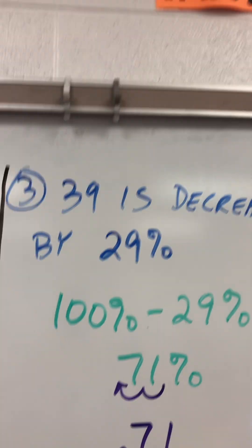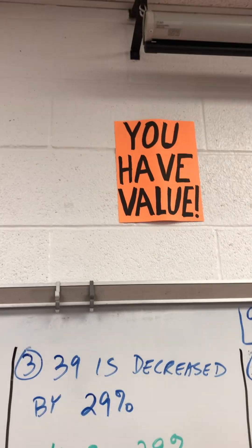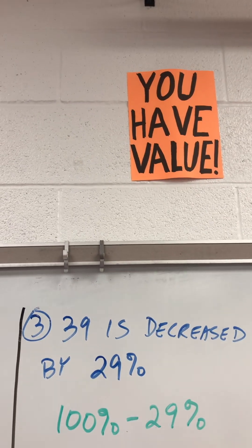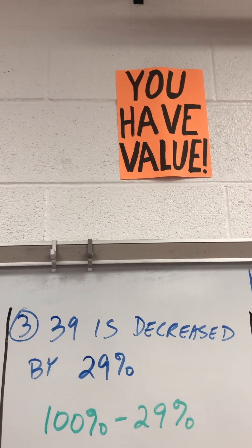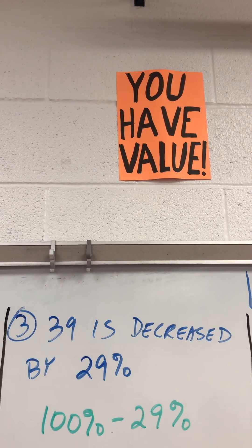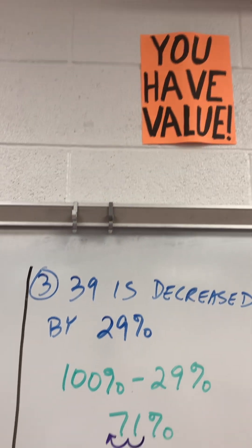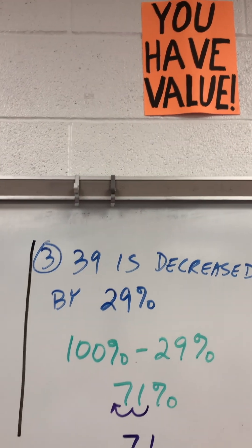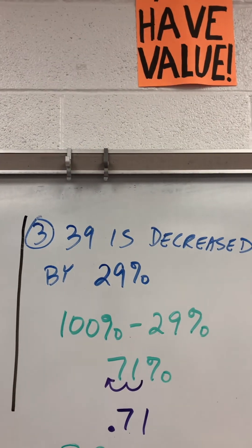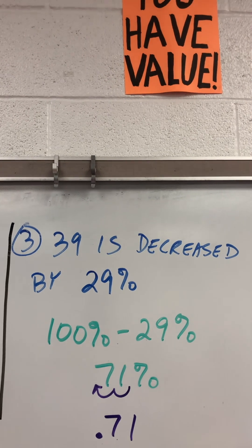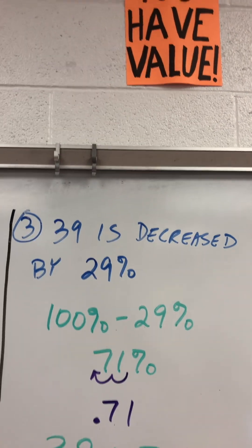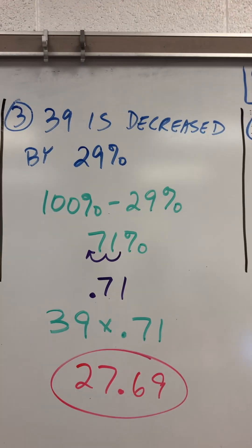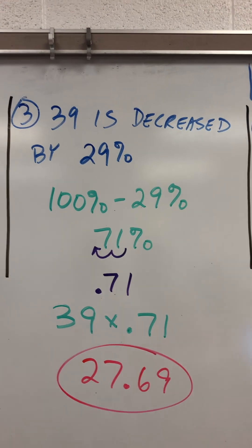39 is decreased by 29%. So do 100% minus 29%. That gives you 71%. Move the decimal two places, it's 0.71. So do 39 times 0.71. That'll give you 27.69.